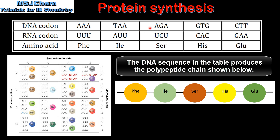If the DNA codon is AGA, the RNA codon is UCU. Using this chart, we can see that this triplet code corresponds to the amino acid serine. Finally, if the DNA codon is CTT, the RNA codon is GAA. This triplet code corresponds to the amino acid glutamic acid.